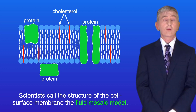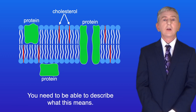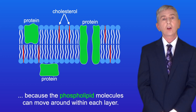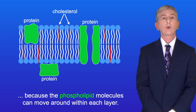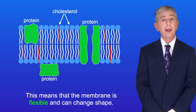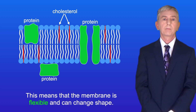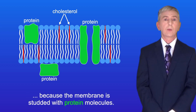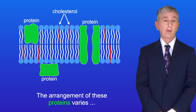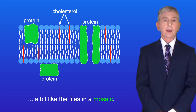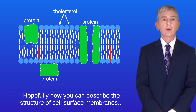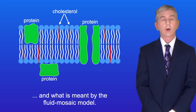Scientists call the structure of the cell surface membrane the fluid mosaic model. The word 'fluid' is used because the phospholipid molecules can move around within each layer, meaning the membrane is flexible and can change shape. The word 'mosaic' is used because the membrane is studded with protein molecules and the arrangement of these proteins varies, a bit like the tiles in a mosaic. So now you should be able to describe the structure of cell surface membranes and what is meant by the fluid mosaic model.